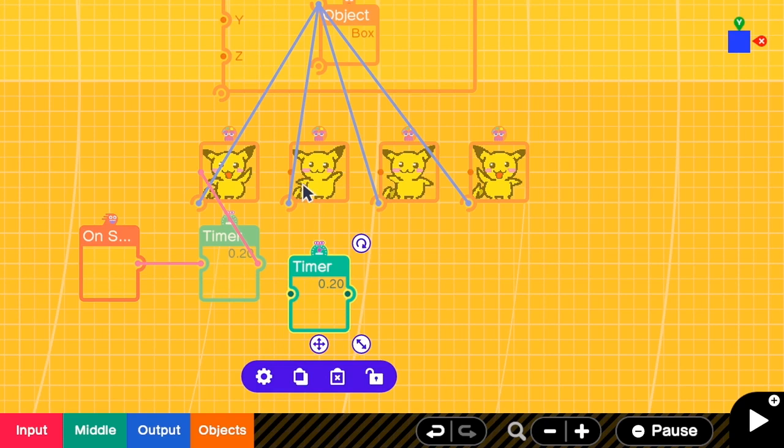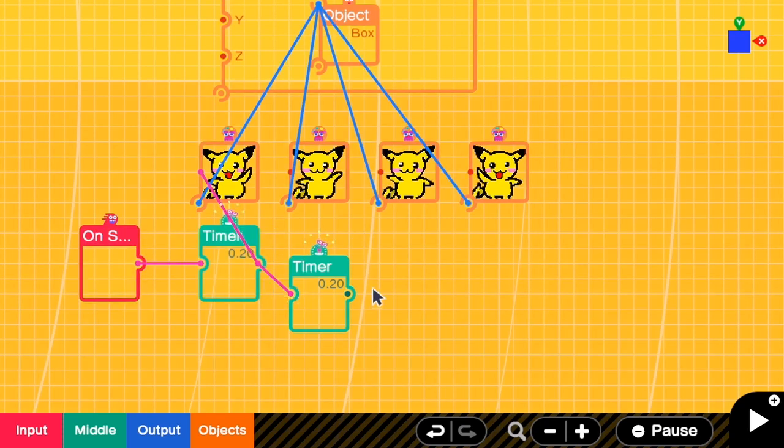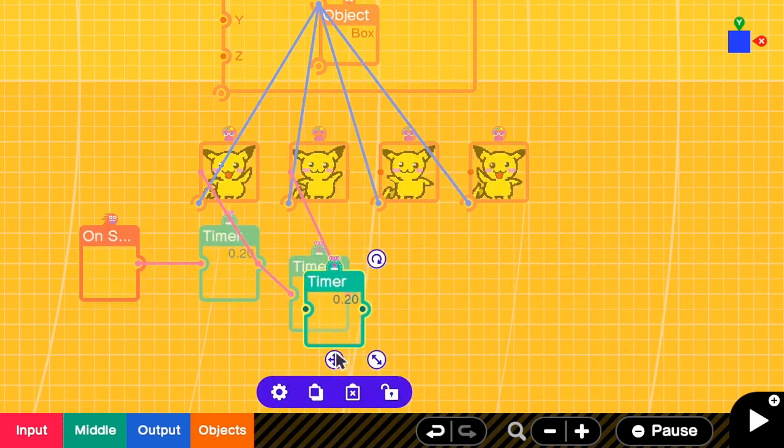Then I repeat this for other Pikachu. Then to show the second texture, this timer has to continue sending the signal to the second timer. And the second timer has to show the second Pikachu. And yeah, we repeat this.